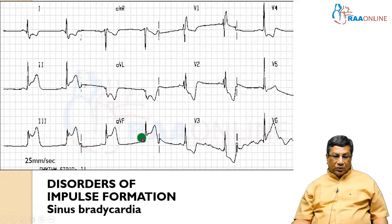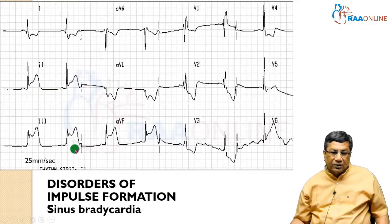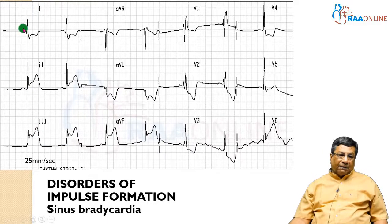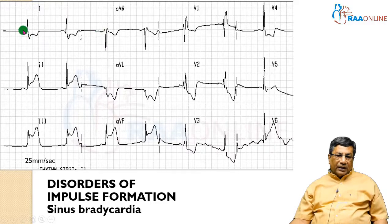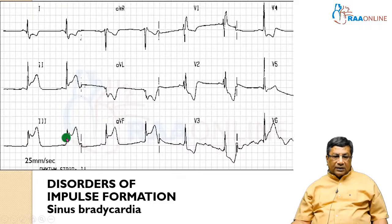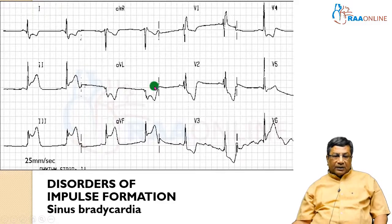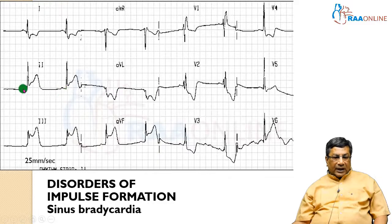What is the ECG approach to bradycardia? You have an upright P wave in lead I, inverted P wave in AVR, normal P wave configuration, constant RR interval, constant PR interval, and constant PP interval, but the heart rate is less than 60 per minute. This is sinus bradycardia — it satisfies all the criteria of sinus rhythm, but the rate is less than 60 per minute.